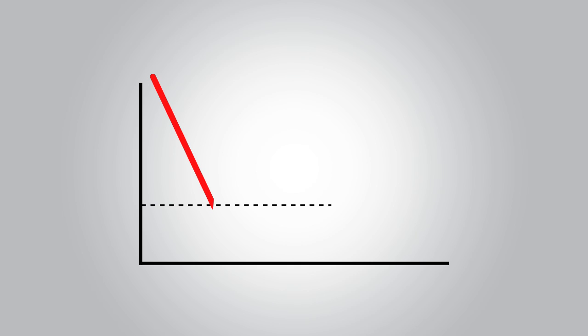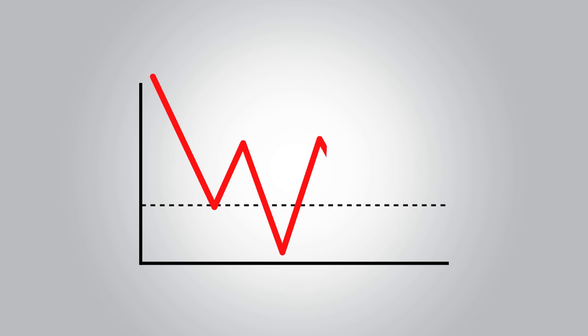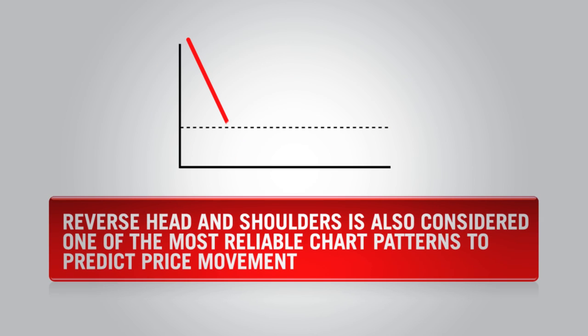Reverse head and shoulders is a chart pattern that declines to a point, then rises. Then the price declines below the previous point and rises again. The last move declines to a point approximately equal to the first point before it rises past both points. The chart resembles an upside-down head and shoulders, hence the name reverse head and shoulders.